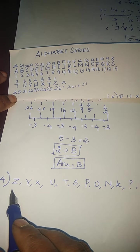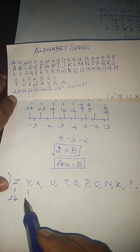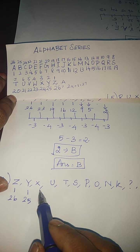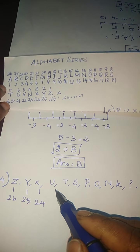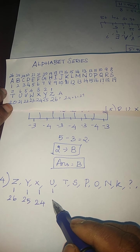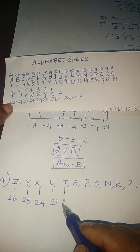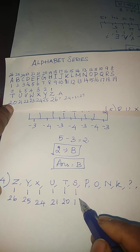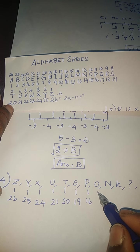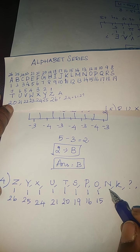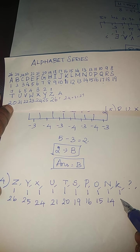Z is 26, Y is 25, X is 24, U is 21, then T is 20, S is 19, P is 16, O is 15, N is 14, K is 11.